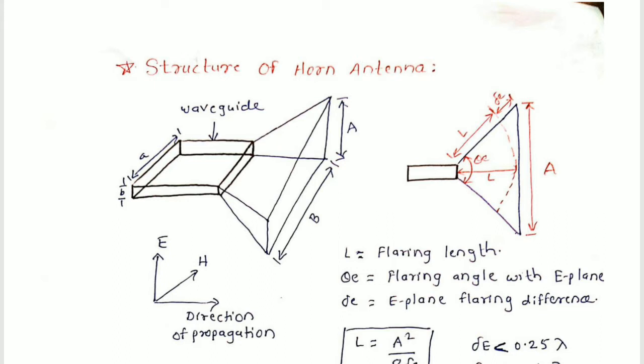There should be impedance matching between the waveguide and free space so that all the radio waves coming from the waveguide will easily transmit into space with no loss of signals, no overheating of the transmitter, and no standing wave ratio. This is the basic objective behind providing this flaring or horn-like structure.